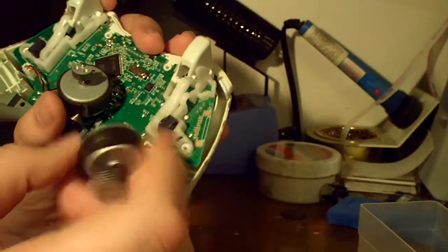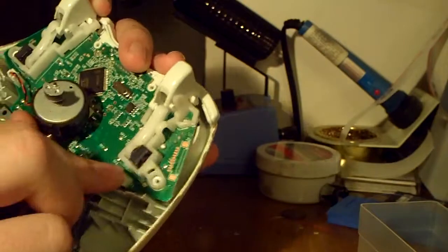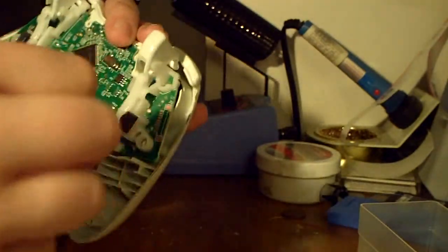Then to get the rumble packs off, you'll see that there's a little plug where they go in. Just kind of push on the motherboard and pull out. Come right out.